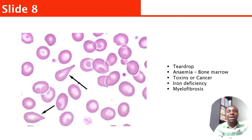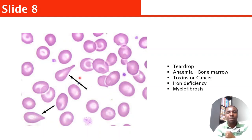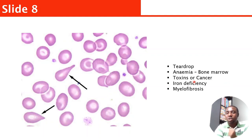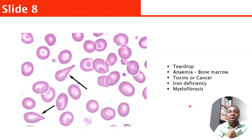Here is a typical example of teardrop cells. Teardrop cells can be seen in anemia which can be due to bone marrow infiltration, toxins, cancer, iron deficiency, or the bone marrow producing abnormal blood cells.